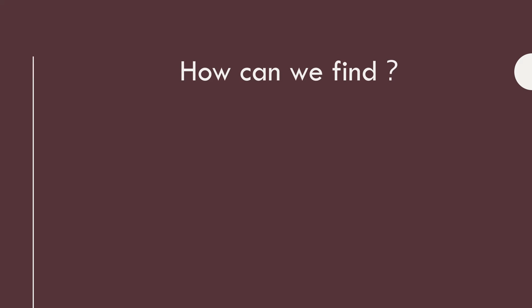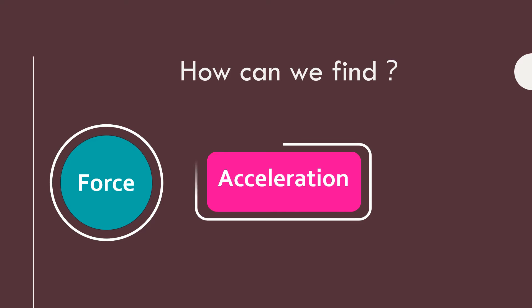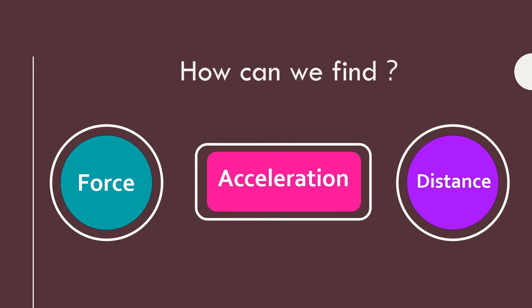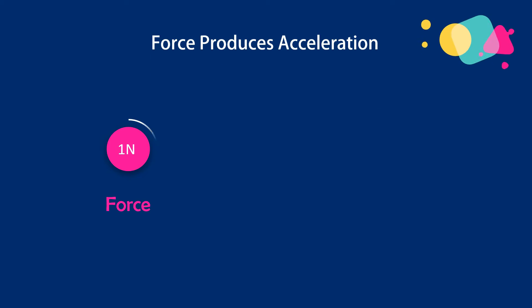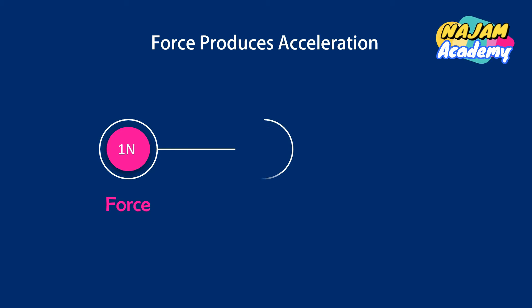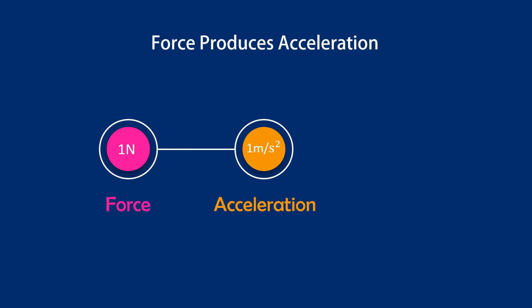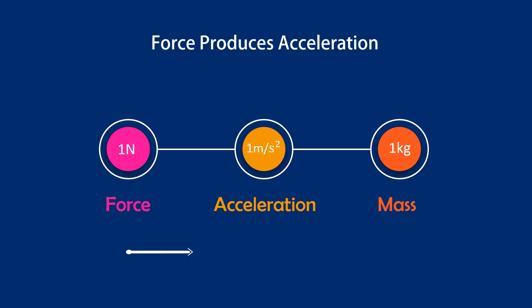How can we find resultant force, acceleration, and distance traveled by a body in physics? In this lecture you will learn finding all these quantities. We learned in the previous video that force produces acceleration in a body — 1 newton is a force that can produce 1 meter per second square acceleration in a body of mass 1 kg, in the direction of the force.